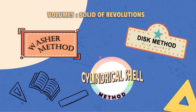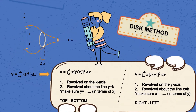We have three methods: the disk method, the washer method, and the cylindrical shell method. For the disk method, this is the example figure. The main formula is V equals the integral from A to B of pi R squared. This R squared represents the radius. In this method, we have four cases. For revolving on the x-axis or revolving on the line y equals k, we use pi times f(x) squared, and y has to be in terms of x. We take the top function minus the bottom function.